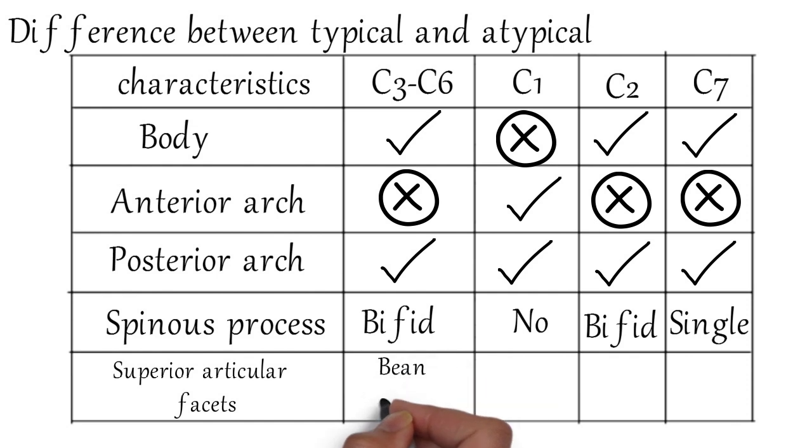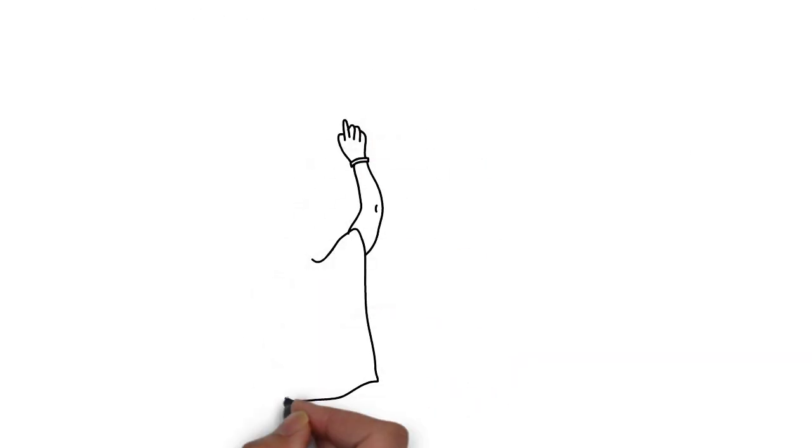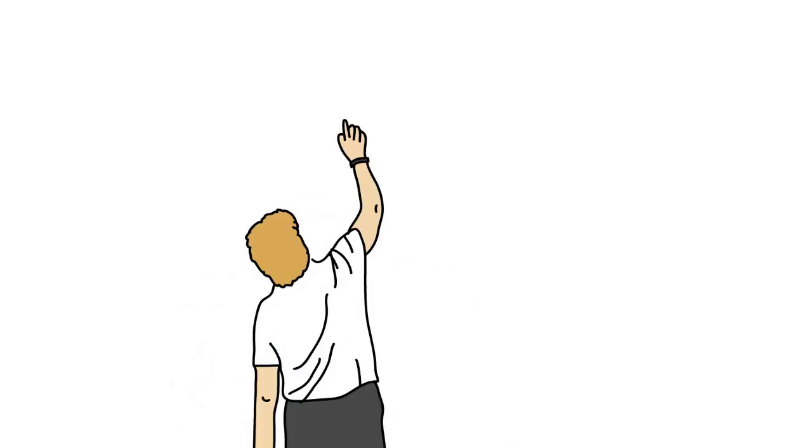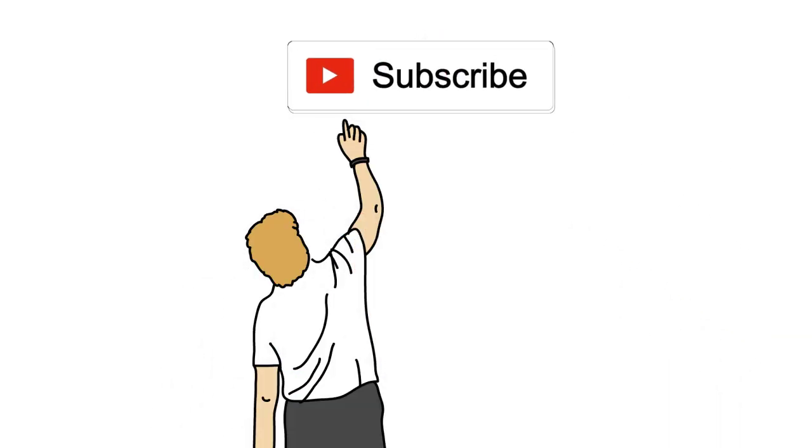The superior articular facets are bean-shaped in all cervical vertebrae except in C2, which is oval in shape.